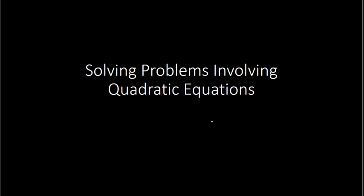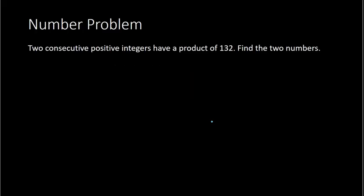The first kind involves numbers. Here we have two consecutive positive integers that have a product of 132. Find the two numbers.